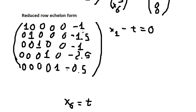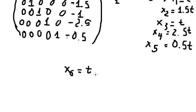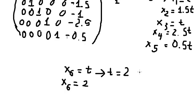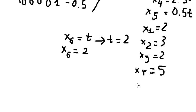Let's say S6 equals t. So for the first one, S1 minus t equals zero, which means S1 equals t. Similarly, S2 equals 1.5t, S3 equals t, S4 equals 2.5t, and S5 equals 0.5t.